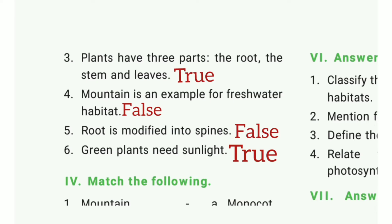Third: Plants have three parts — the root, the stem, and leaves. The answer is true. Fourth: Mountain is an example for fresh water habitat. The answer is false. Fifth: Root is modified into spines. The answer is false.